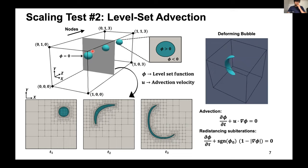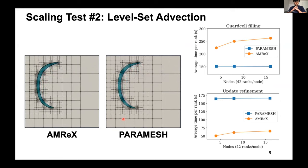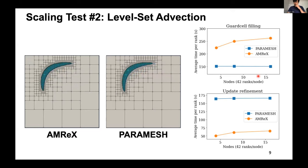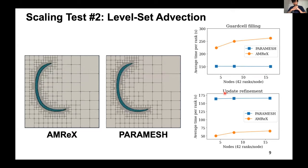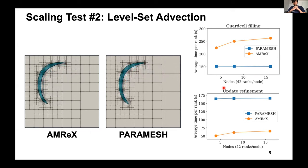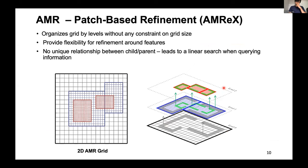Paramesh uses an oct-tree based refinement with a more constrained, structured pattern. Starting with a coarse grid, blocks are arranged in a space-filling curve and refined successively. This leads to a unique parent-child relationship — every child has exactly one parent — which can be encoded in a tree data structure allowing faster lookups and avoiding linear searches.